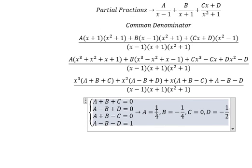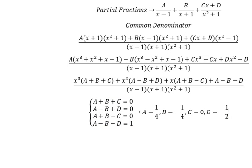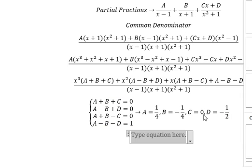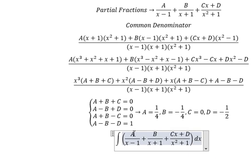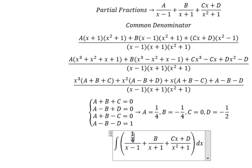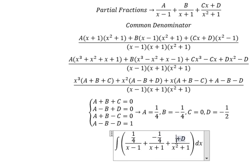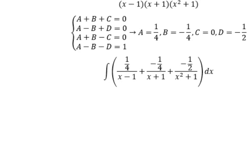And now, I will put A, B, C, D in here. So A equals to 1 over 4, B equals to negative 1 over 4. This one, you got 0. D equals to negative 1 over 2. And now, we have the final answer.